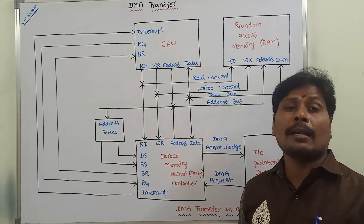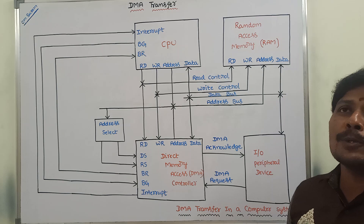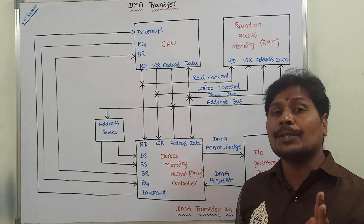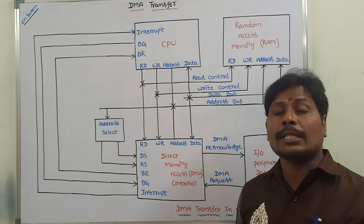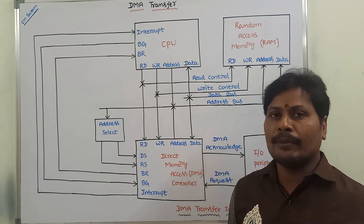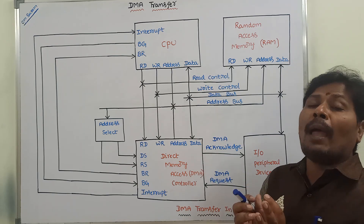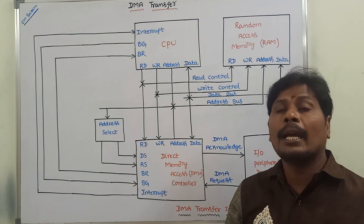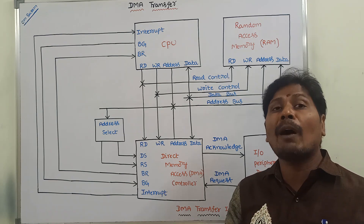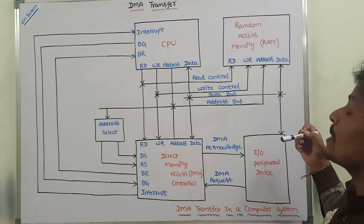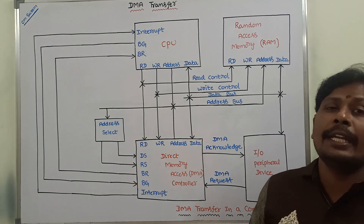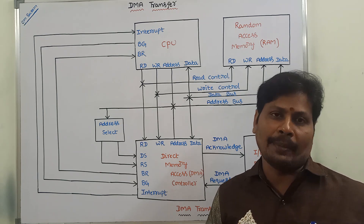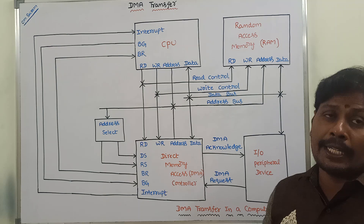There are two applications of DMA transfer. The first one is it is used for updating the interactive display of a terminal. The second one is it is used to transfer data at the fastest rate between the magnetic disk and the main memory, since DMA transfer does not involve the CPU, enabling high-speed data transfer.